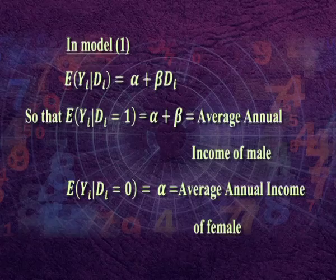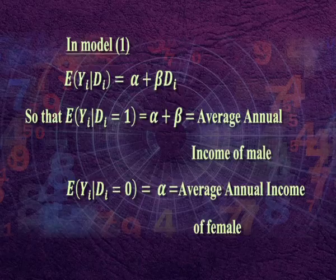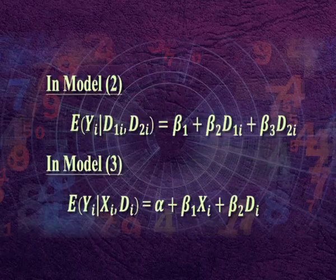In model 1, E(y_i | d_i) = alpha + beta * d_i. So E(y_i | d_i = 1) = alpha + beta, which equals average annual income of males. E(y_i | d_i = 0) = alpha, which equals average annual income of females. From the above presentation, it may be clear that if we do not use dummy variables then we have to run separate regressions for male and female. Thus, use of dummy variables simplifies the method by considering only one regression.